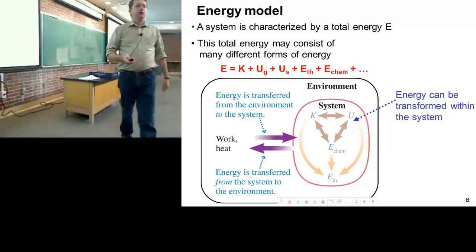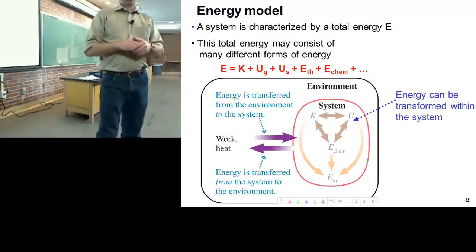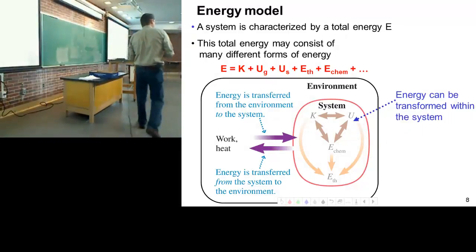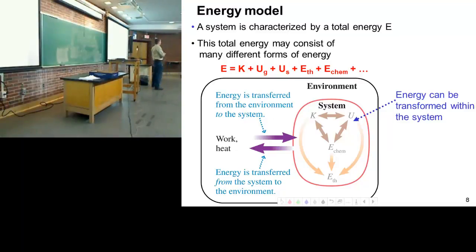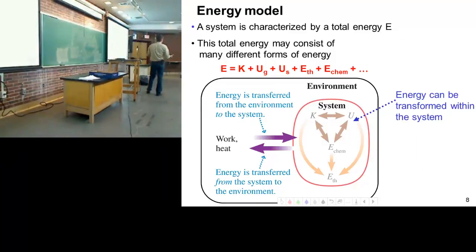Energy is very much the same way. We have our system - we define our system to be whatever we want. Sometimes the system is going to be just a simple thing, sometimes the system involves two things. A car on a hill - the system is the car and the hill. Inside the system I can transfer energy around. Energy can go from kinetic to potential energy and back and forth. As long as I'm inside my system, the amount of energy doesn't change.